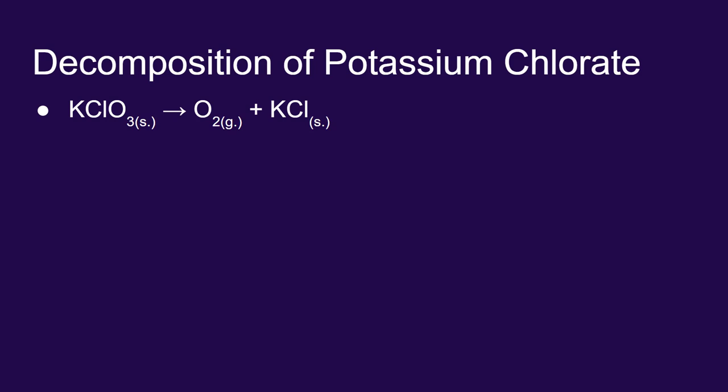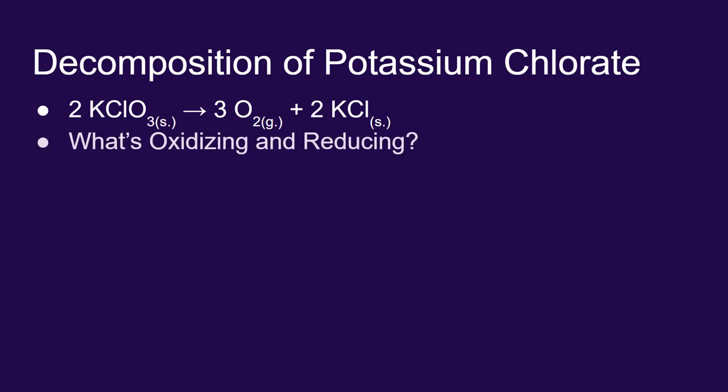Potassium chlorate, KClO3, decomposes to form oxygen gas and potassium chloride. So we can balance this by putting a 2 in front of the KClO3 to give us three oxygen molecules and two formula units of potassium chloride. Let's figure out what's oxidizing and what's reducing here.